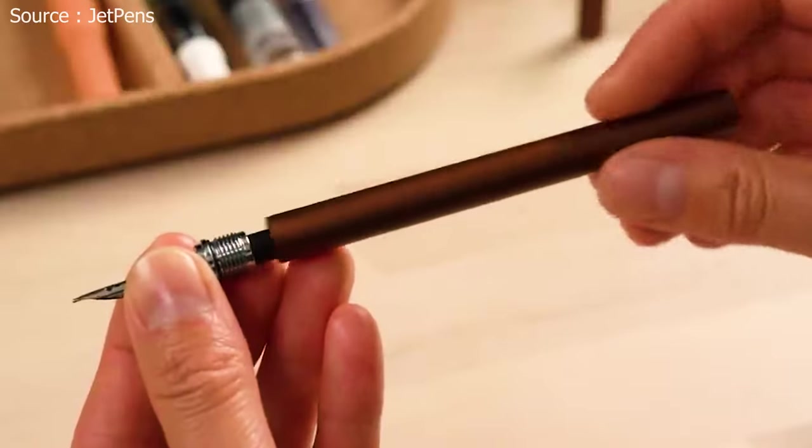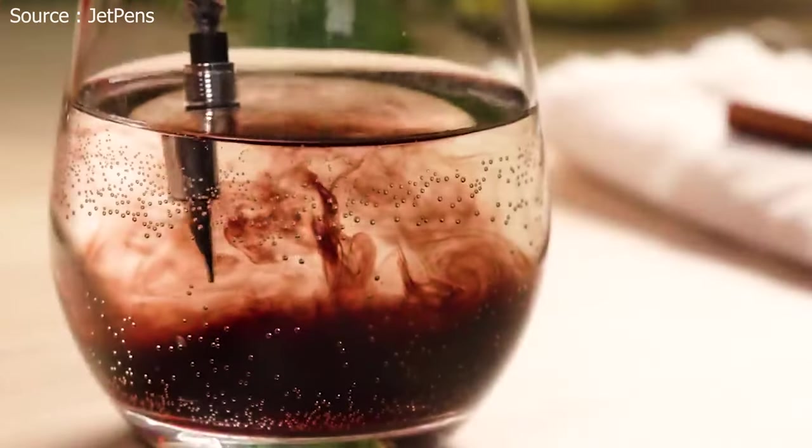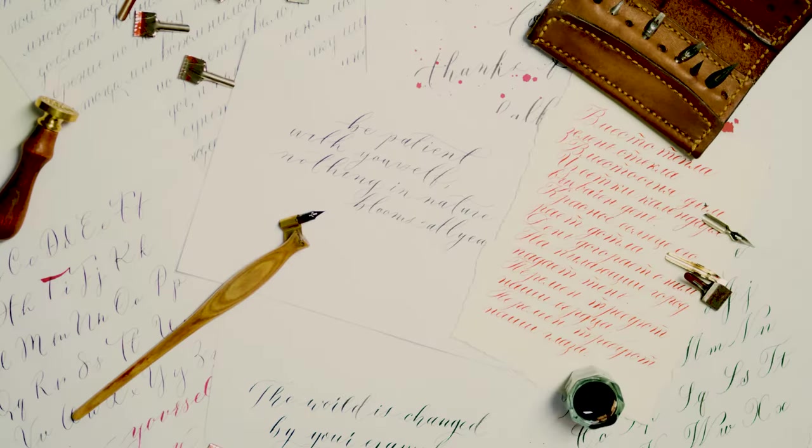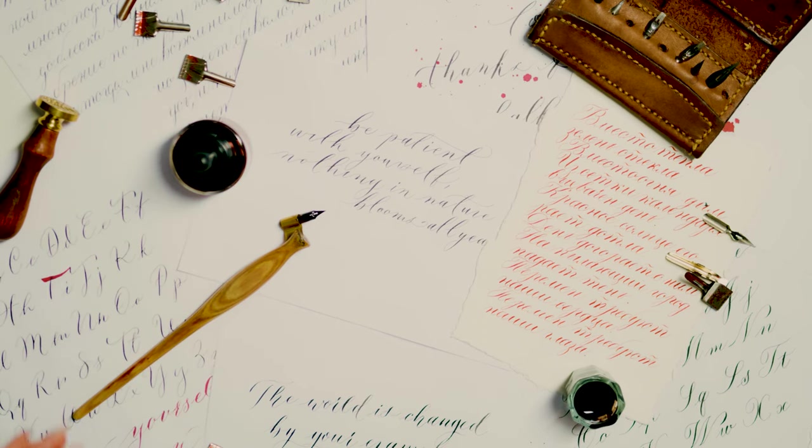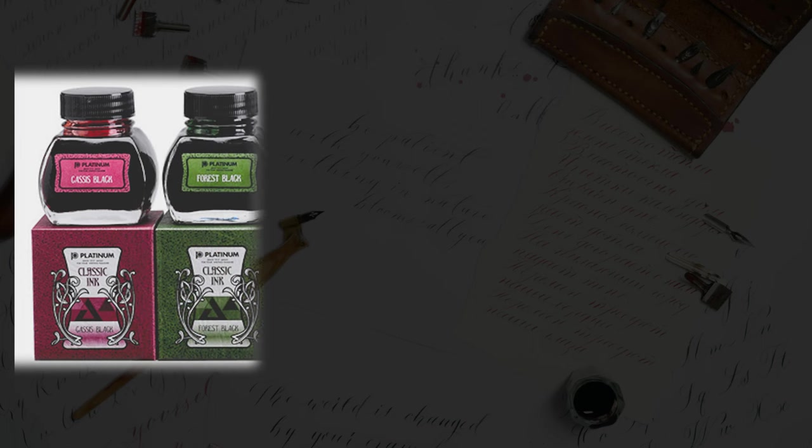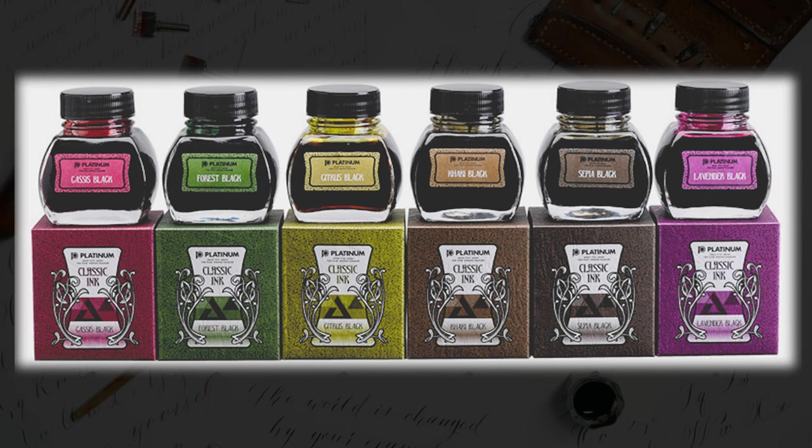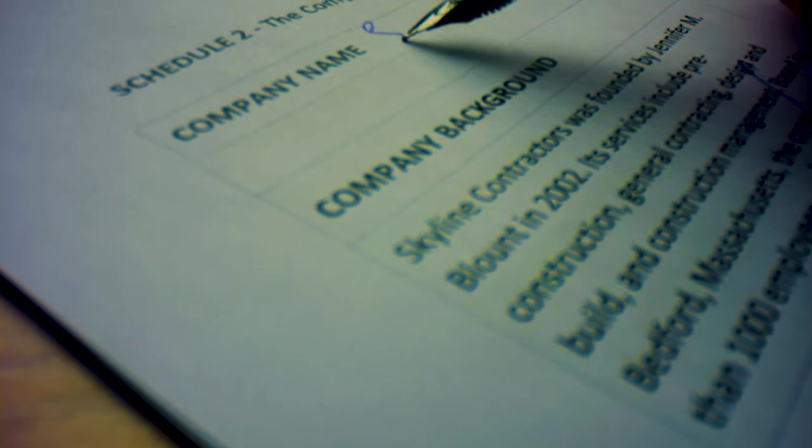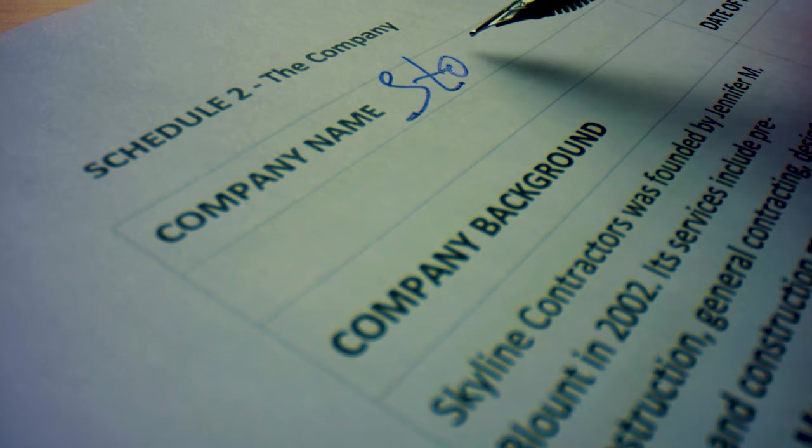Fountain pens require more maintenance than other writing instruments. They must be regularly cleaned and flushed to prevent ink from drying out and clogging the feed or nib. One of the key benefits of using a fountain pen is the ability to customize the writing experience. Fountain pen inks come in a wide range of colors and formulations, from standard blue and black inks to vibrant, shimmering inks with metallic particles. Some inks are designed to flow more smoothly than others, while others are more resistant to smudging or bleeding through the paper.